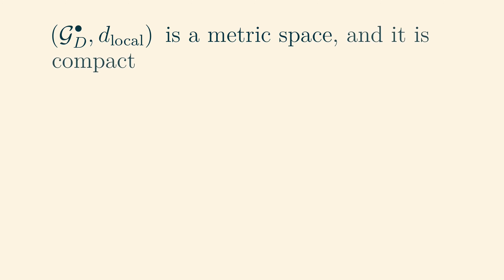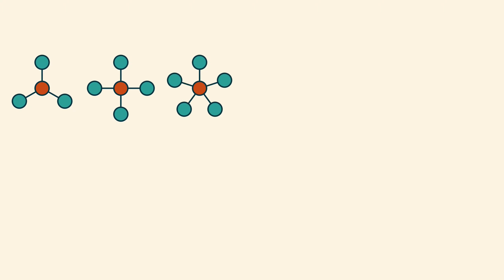Now, with the local distance, the set gd dot becomes a metric space, and it is compact and separable. These things are not immediately obvious, but it is a good exercise to try and prove these three facts for yourself. As a hint for the compactness, remember that since we are working in a metric space, we must only prove sequential compactness. Also remember that we are considering only sequences of graphs with uniformly bounded maximum degree.